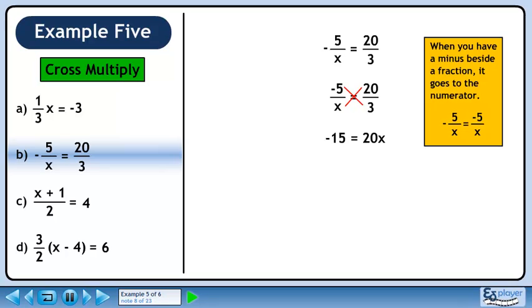Cross multiply to get minus 15 equals 20x. Divide both sides by 20 to isolate x. We can reduce minus 15 over 20 to minus 3 over 4, which is our final answer.